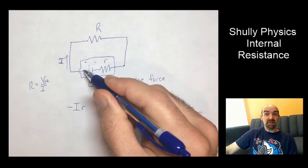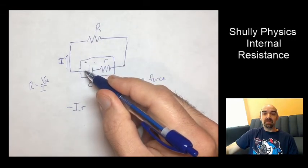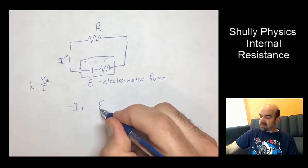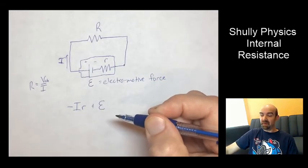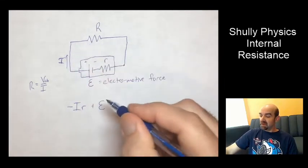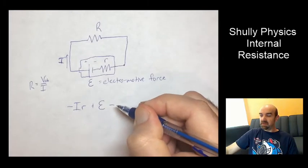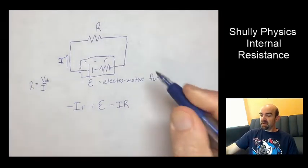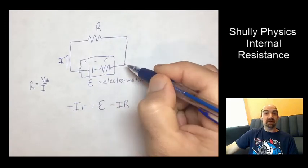Now as we cross the battery, that's going to give a positive potential change. So we're going to add that epsilon, the EMF. That's going to be our positive value. And as we go around and cross this load, we're going to have another negative change of potential of capital I, capital R. And that gets us back down, back to that starting point again.